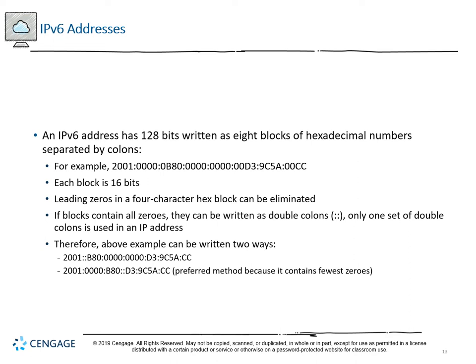IPv6 uses 128 bits. An uncompressed IPv6 address example is: 2001:0000:0B80:0000:0000:00D3:9C5A:00CC. The 2001 prefix is common, especially for global unicast addresses. Each block is 16 bits in length, so 2001 in binary is 0010-0000-0000-0001.